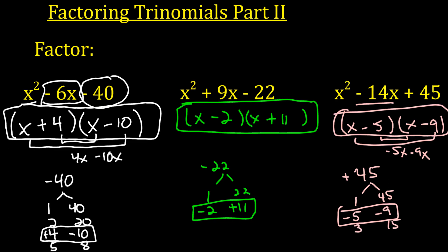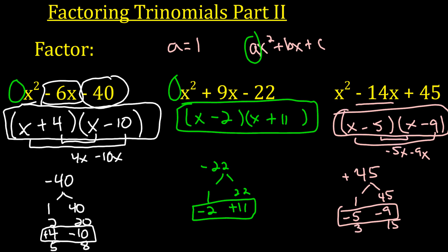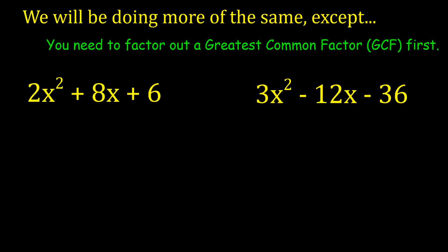So this is just a review of how to factor trinomials where a equals 1. In a trinomial, it's always in the form ax squared plus bx plus c. The a is referring to the number in front of x squared, and that number in front of x squared in all of these is 1 — there's just an assumed 1 in front. So that was the trick for finding the factors when a equals 1. In this video, a is not equal to 1 — notice how a equals 2 and a equals 3 in these two examples.